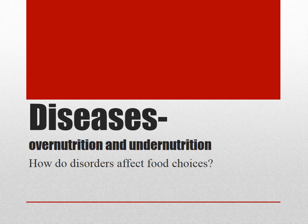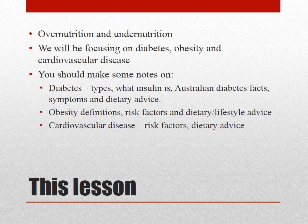Today we're continuing on with our foods for special needs, looking at diseases - in particular over nutrition and under nutrition and how these affect food choices. We'll be focusing on diabetes, obesity and cardiovascular disease. You should make notes on diabetes types, what insulin is, diabetes facts, symptoms and dietary advice, then obesity definitions, risk factors and dietary advice, and the same for cardiovascular disease. By the end you'll see how much over nutrition affects people.